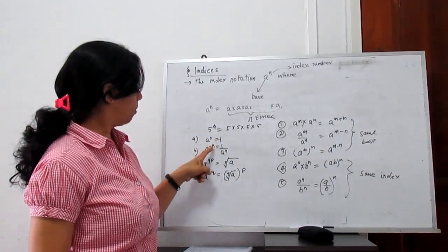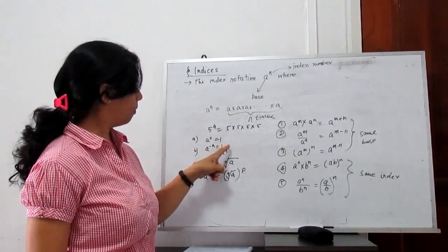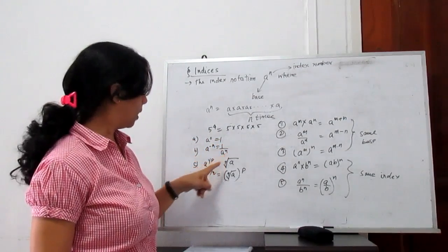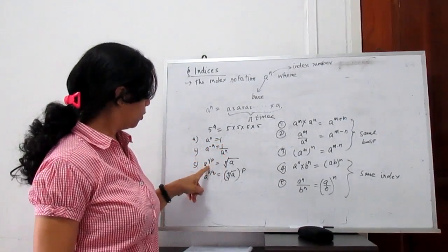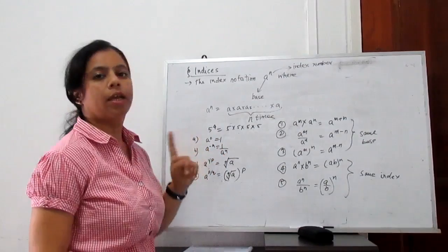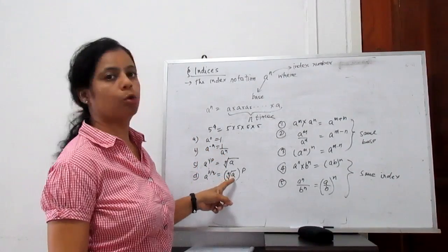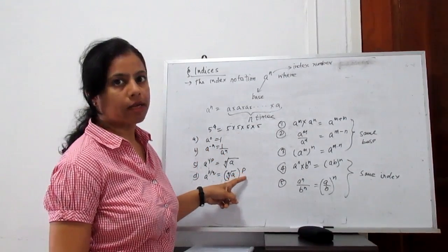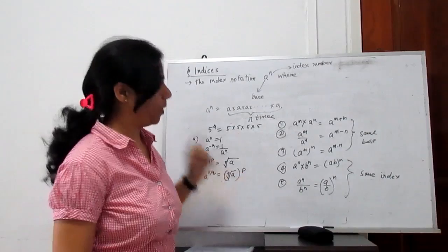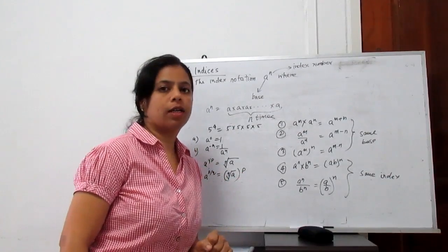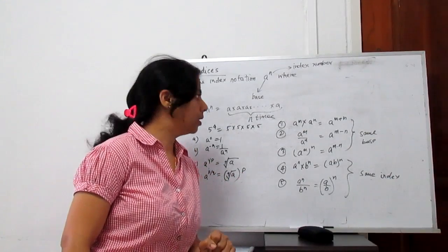a to the power minus n equals 1 upon a to the power n. And a to the power 1 by p means the p-th root of a whole to the power p. Here are some laws for indices.